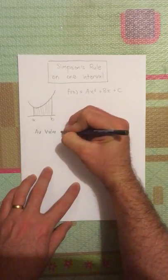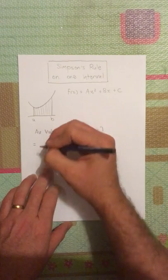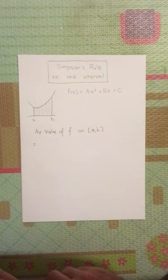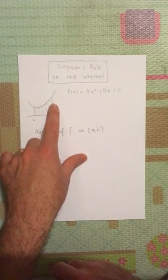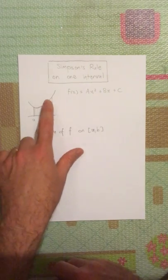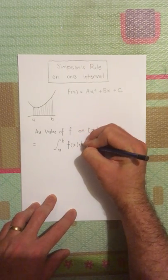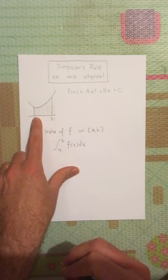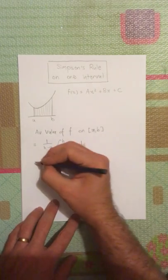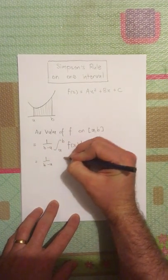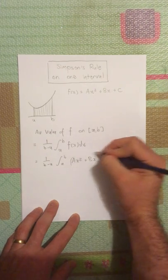The average value of f on the interval [a, b]: if I imagine the area as a rectangle, it will be width times height, so the average value is the area divided by the width. The area is the integral from a to b of f(x) dx, and the width is b minus a. So the average value is 1 over (b minus a) times the integral from a to b of ax² + bx + c dx.